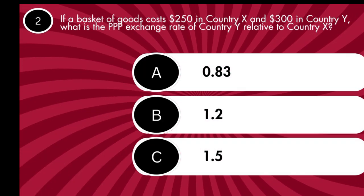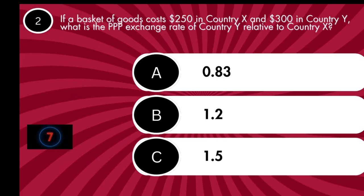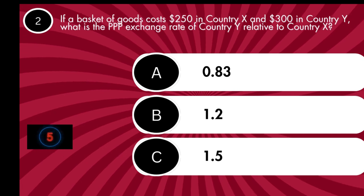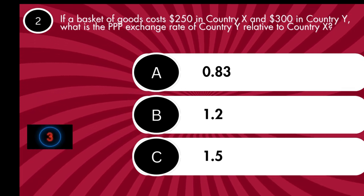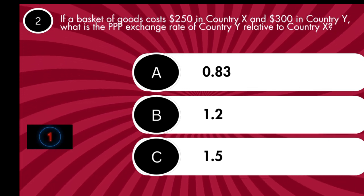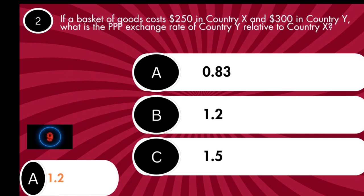Question 2: If a basket of goods costs $250 in country X and $300 in country Y, what is the PPP exchange rate of country Y relative to country X? The answer is 1.2, obtained by dividing $300 by $250, since it is relative to X, X is used as the denominator.